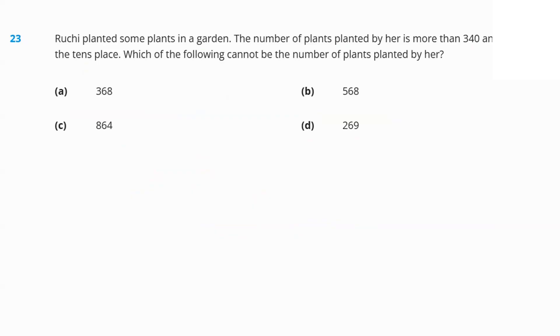Next question. Rohit planted some plants in the garden. The number of plants planted by her is more than 340 and has 6 at the 10th place. More than 340 and has 6 at the 10th place. All of them have 6 at the 10th place. That means all of these are possible. Which of the following cannot be planted by her? Then option D because that's less than 340. That's our answer.